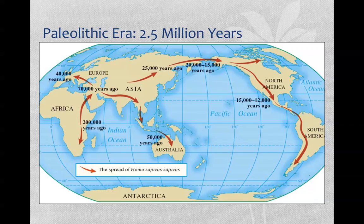This was an ice flow, an ice sheet at the time. And then the earliest examples we can find of Homo sapiens sapiens in the Americas is about 15,000 to 12,000 years ago. So what was life like for Paleolithic folks?